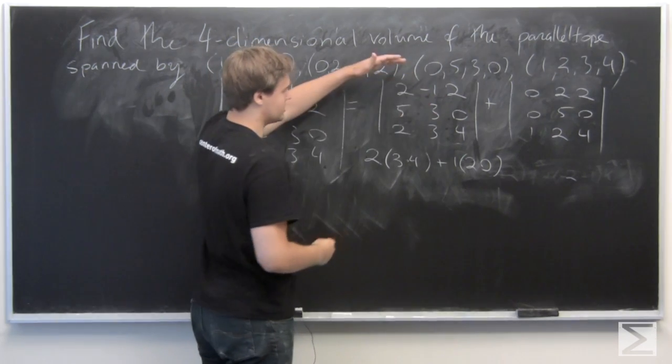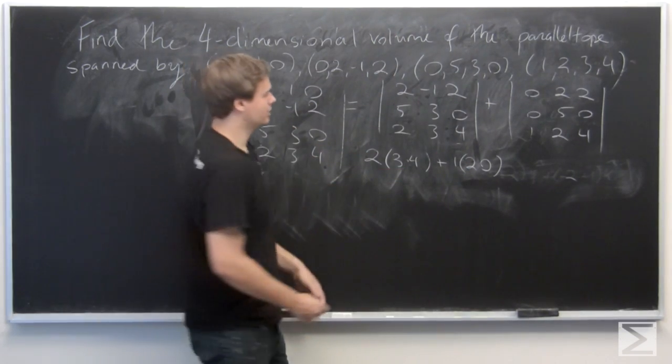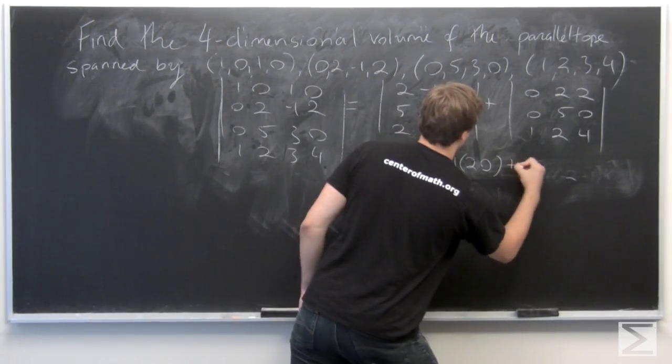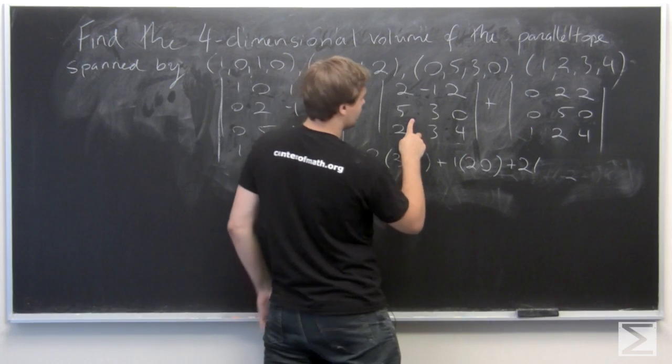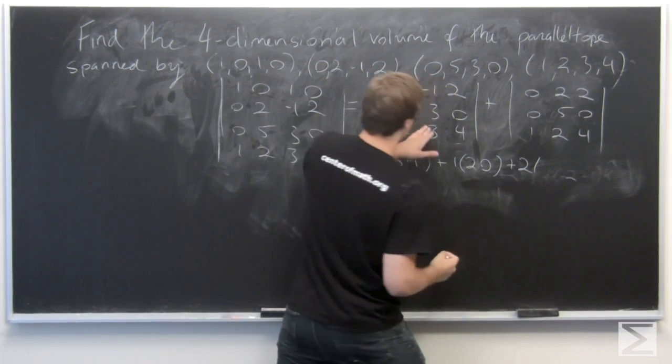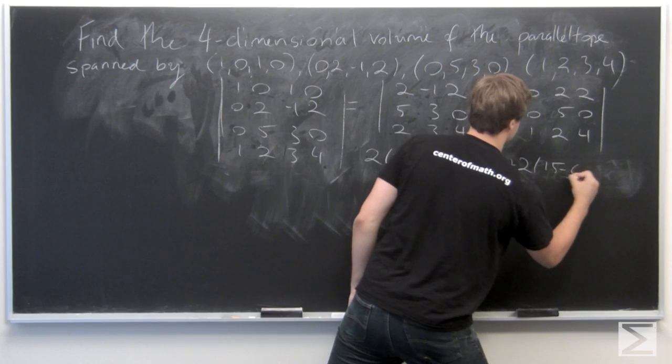And 2 times the matrix given by throwing away the top row and the last row on the right. That's going to be 2 times 5 times 3 minus 3 times 2, so 15 minus 6.